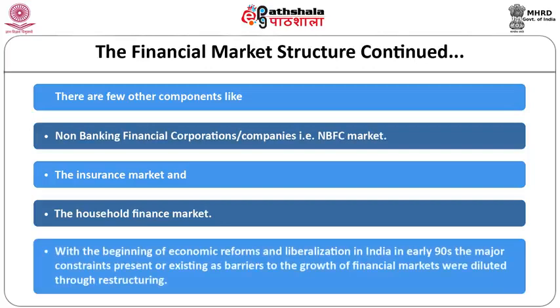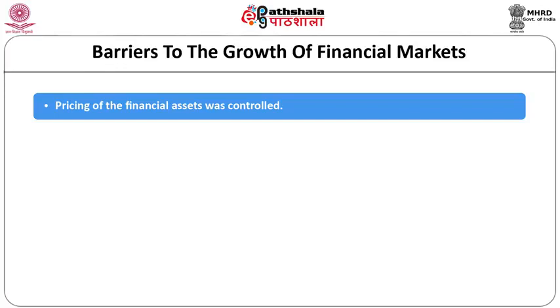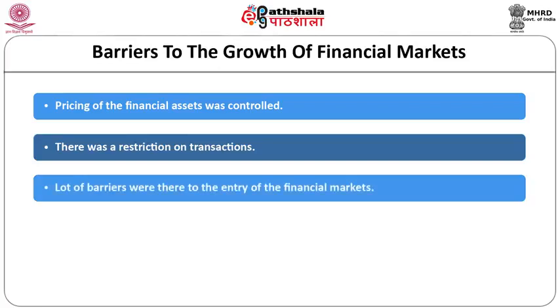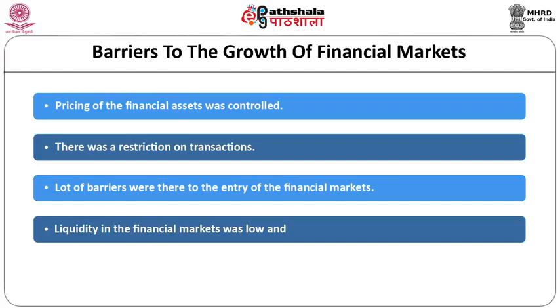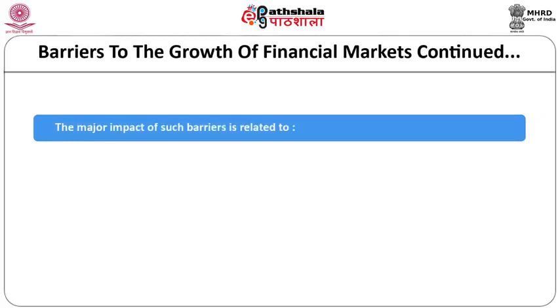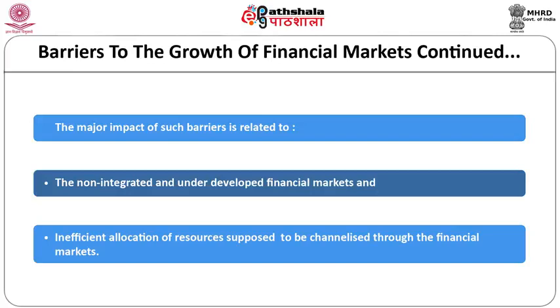With the beginning of economic reforms and liberalization in the early 90s, the major constraints present as barriers to the growth of the financial market were diluted through restructuring. These barriers were: pricing of financial assets was controlled; there was restriction on transactions; lot of barriers to entry of financial market; liquidity in financial market was low; and there was unsuitably large transaction cost. The major impact of such barriers was related to non-integrated and underdeveloped financial markets and inefficient allocation of resources supposed to be channelized through financial markets.